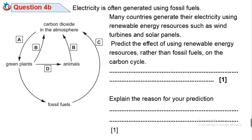Question 4B. Electricity is often generated using fossil fuels. Many countries generate electricity using renewable energy resources such as wind turbines and solar panels. Predict the effect of using renewable energy resources rather than fossil fuels on the carbon cycle, and explain the reason for your prediction.